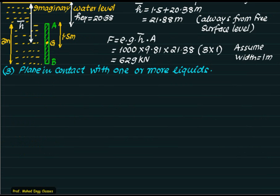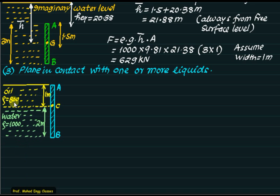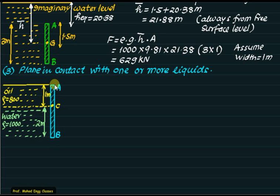In the third situation, the plane AB is in contact with more than one liquid — oil and water. We have 1 meter of oil above 2 meters of water. Since oil is lighter, it floats above the water. Part AC of AB is in contact with oil only, and part BC is in contact with water. Oil exerts pressure on AC and an indirect pressure on BC, whereas water only affects BC.